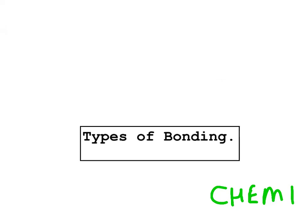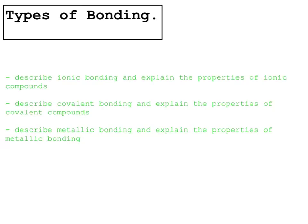Welcome to the video on types of bonding. Our aims for this video are to be able to describe ionic bonding both with words or diagrams and explain the properties of ionic compounds. Do the same for covalent bonding and the same for metallic bonding.